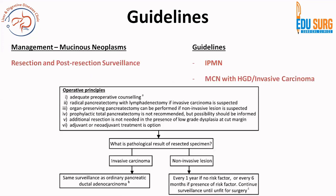For managing mucinous neoplasms, resection and post-resection surveillance is required in IPMN and in MCN patients with high-grade dysplasia or invasive carcinoma. Operative principles include lymphadenectomy and oncologically safe surgery. Additional resection is not required for low-grade dysplasia on the frozen section of the cut margin. Adjuvant or neoadjuvant therapy is based on extent of disease and PDAC guidelines. For invasive carcinoma, surveillance follows normal PDAC protocols; for non-invasive lesions, follow-up is every one year or every six months in the presence of a risk factor.